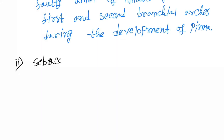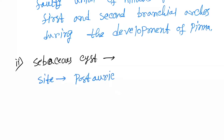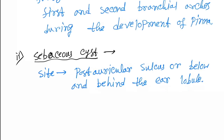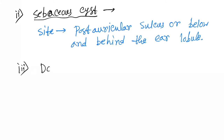The second benign tumor of the auricle is the sebaceous cyst. The site of the sebaceous cyst is the post-auricular sulcus or below and behind the ear lobule.